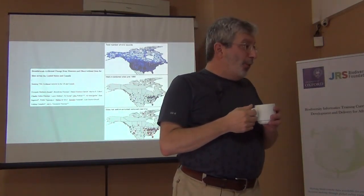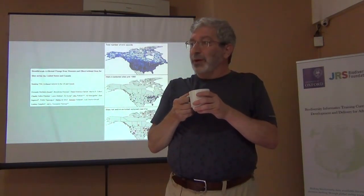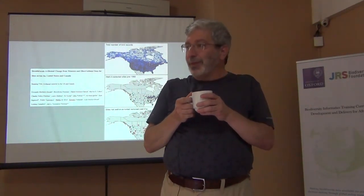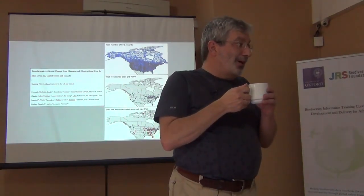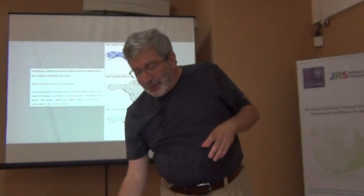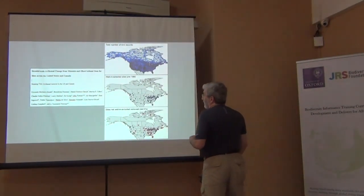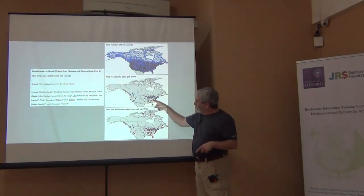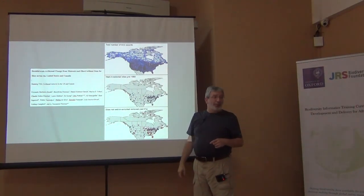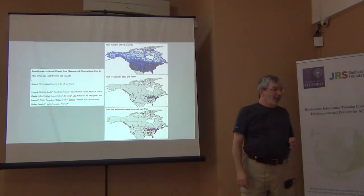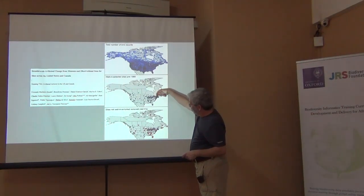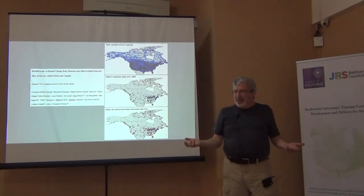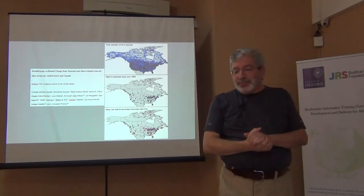That's our baseline — those are the sites where, with the digital accessible knowledge available from before 1980, 139 sites are demonstrably well sampled. Right away we can see some problems: the well-sampled sites are concentrated right where people are concentrated in North America, essentially from Chicago across into Pennsylvania and the eastern seaboard.